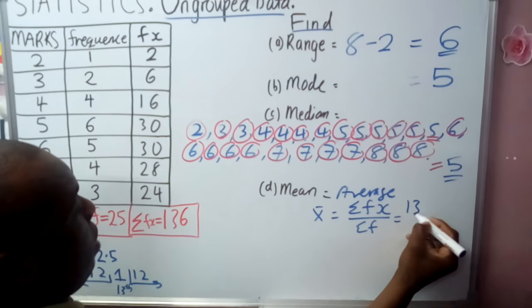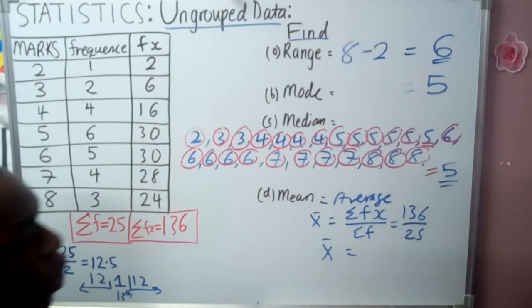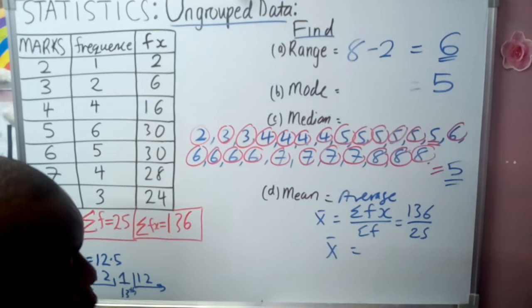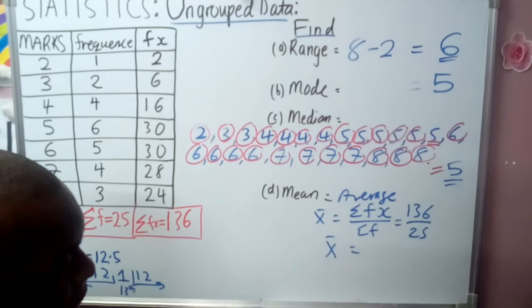So 136 divided by 25 gives us our final mean. And our mean will be 136 divided by 25. That is 5.44.